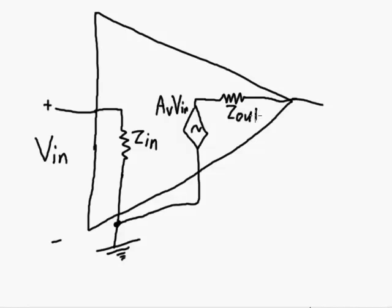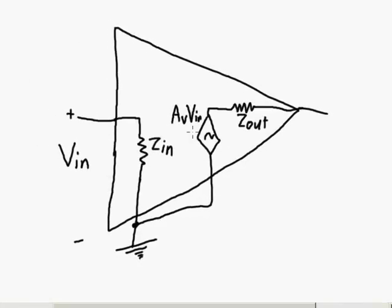And then the third thing in the amplifier, the third characteristic is the output impedance. We've got voltage gain, our three characteristics that we're worried about: our voltage gain, our input impedance, and our output impedance.